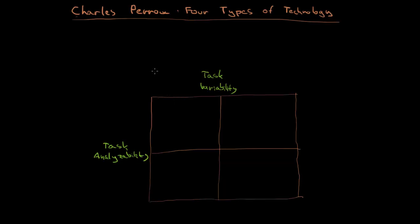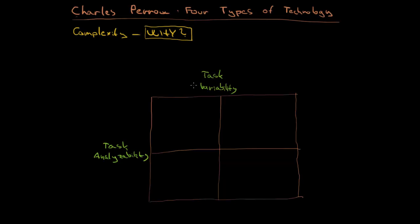In the last video I introduced you to the idea of Charles Perrow about the complexity of the task and the complexity of the technology. He focuses on the complexity of the tasks and asks himself why do we consider some tasks to be complex and some tasks to be routine and simple. He sees two perspectives: task variability — how many exceptions can occur while performing the task — and task analyzability — whether the programming of the production process is possible.